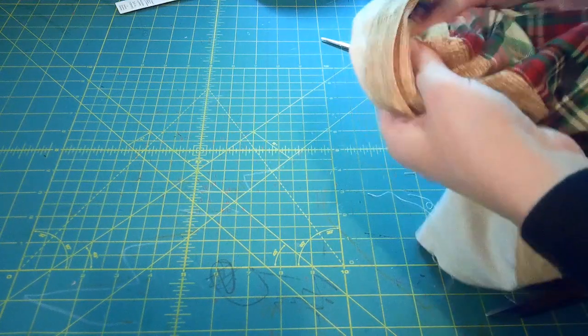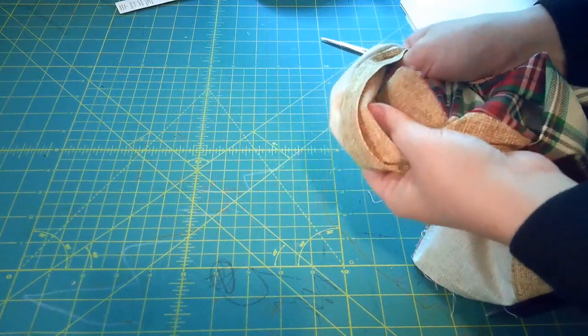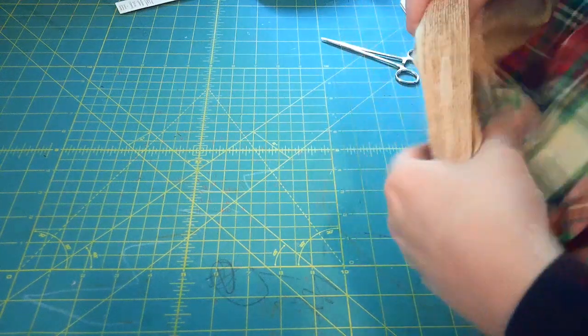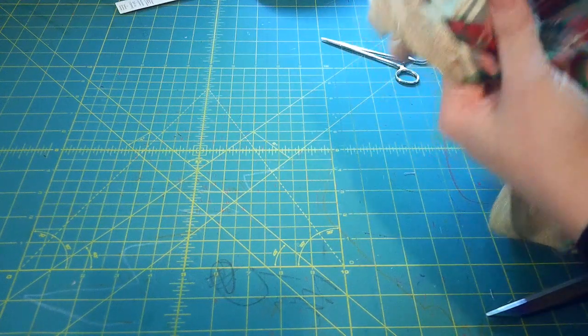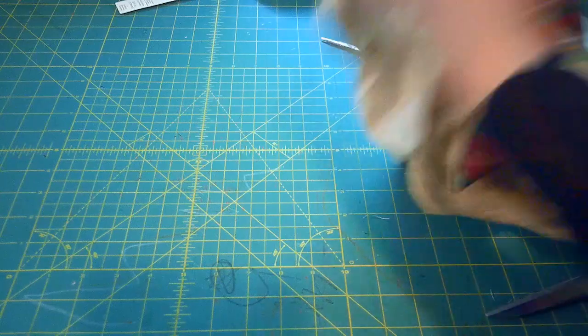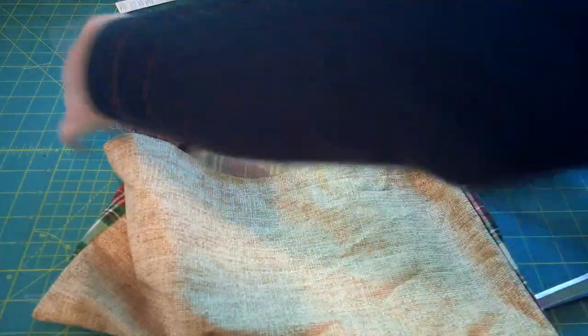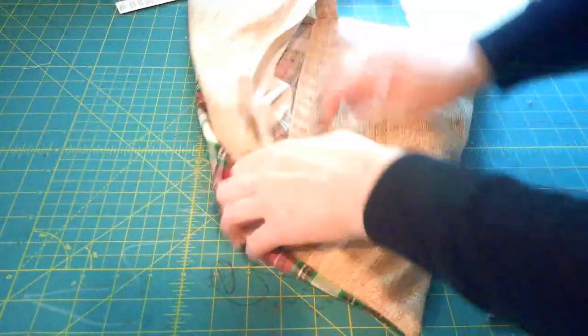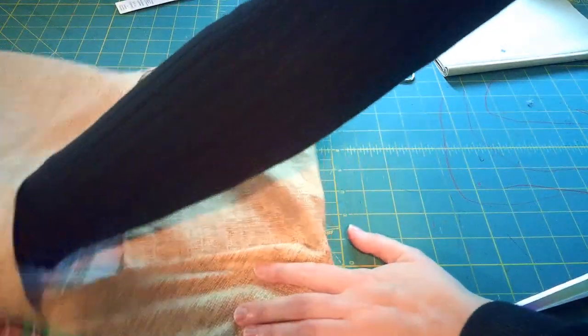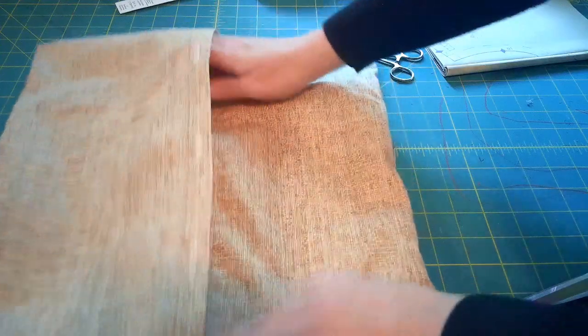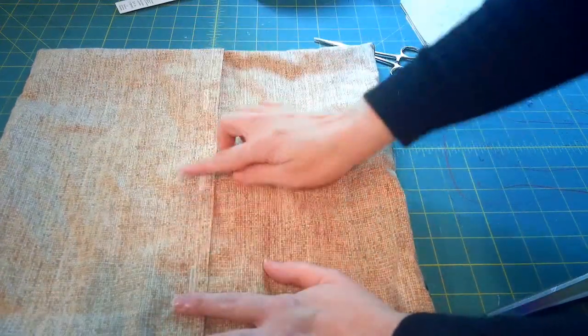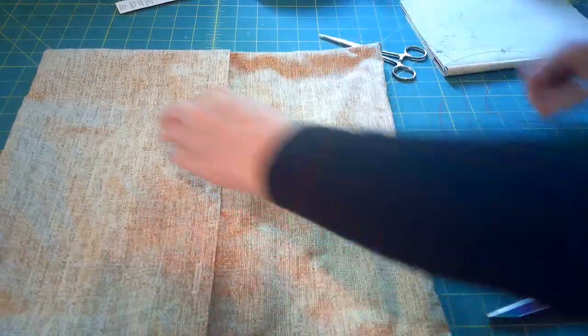And then once you've got all those corners turned out, you'll want to take it over to your ironing board and press all this so it lays nicely. I really should have probably pressed this after I finished sewing it, pressed all those seams so that the threads would integrate better with the fabric itself.